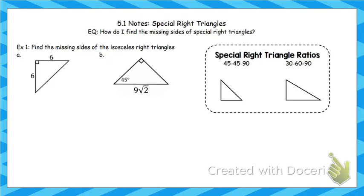If you remember from geometry, there were two types of triangles that had a specific ratio for all their sides. The first one was a 45-45-90 triangle — also called an isosceles right triangle — where you have two angles that are 45 degrees and a third angle that is 90. The ratio of those sides was x, x, and x√2. Across from each 45-degree angle is x, and across from the 90 is x√2.